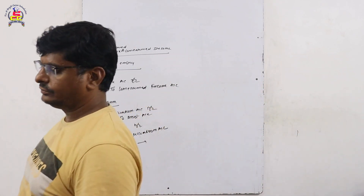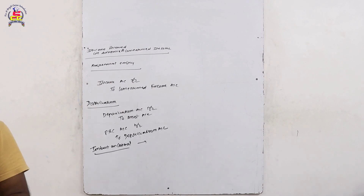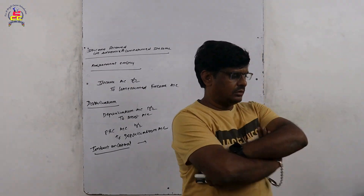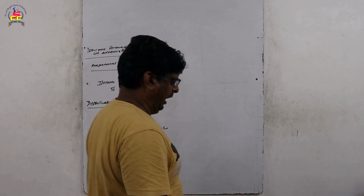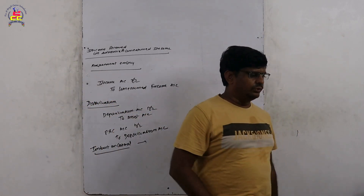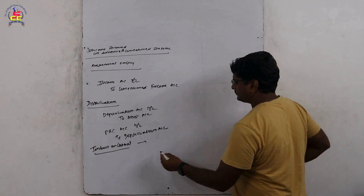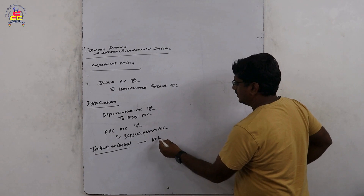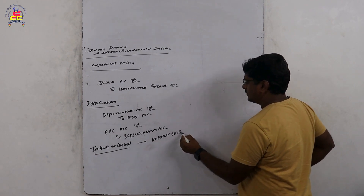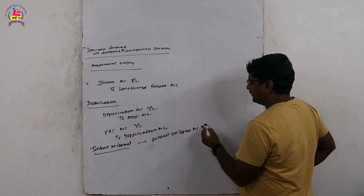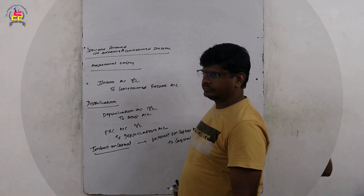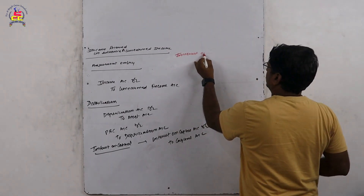It is shown on the debit side of Profit and Loss, and added to capital. Interest on Capital Account Dr. To Capital.